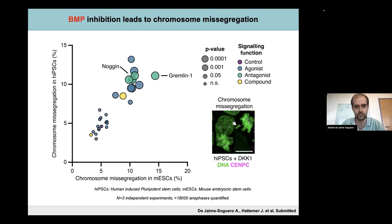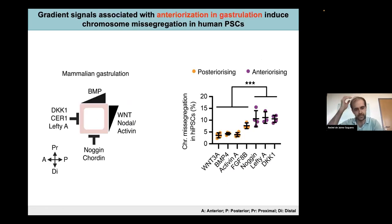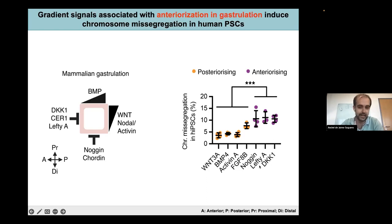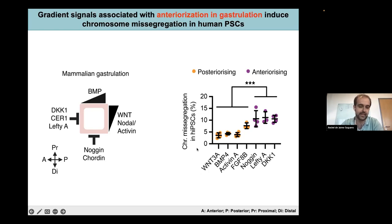It didn't escape our mind that many of these signals that were leading to chromosome missegregation are critical to establish the epiblast anteriorization during gastrulation — that is, for instance, DKK1 or Lefty. While the signals that are promoting posteriorization at the primitive streak, such as WNT3A, BMP4, or Activin A, were triggering really low levels of chromosome missegregation.